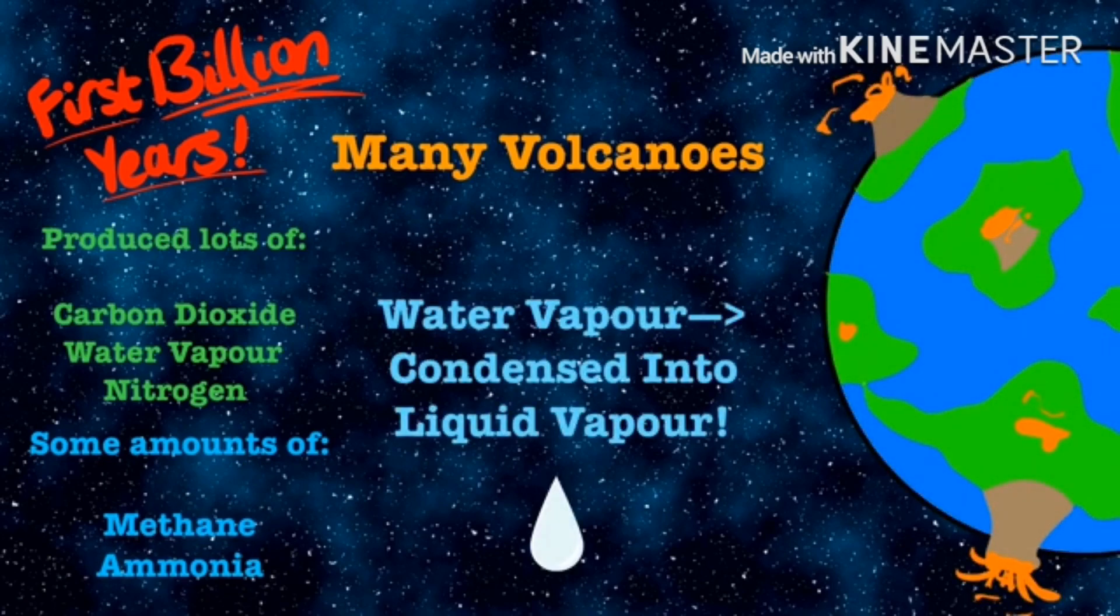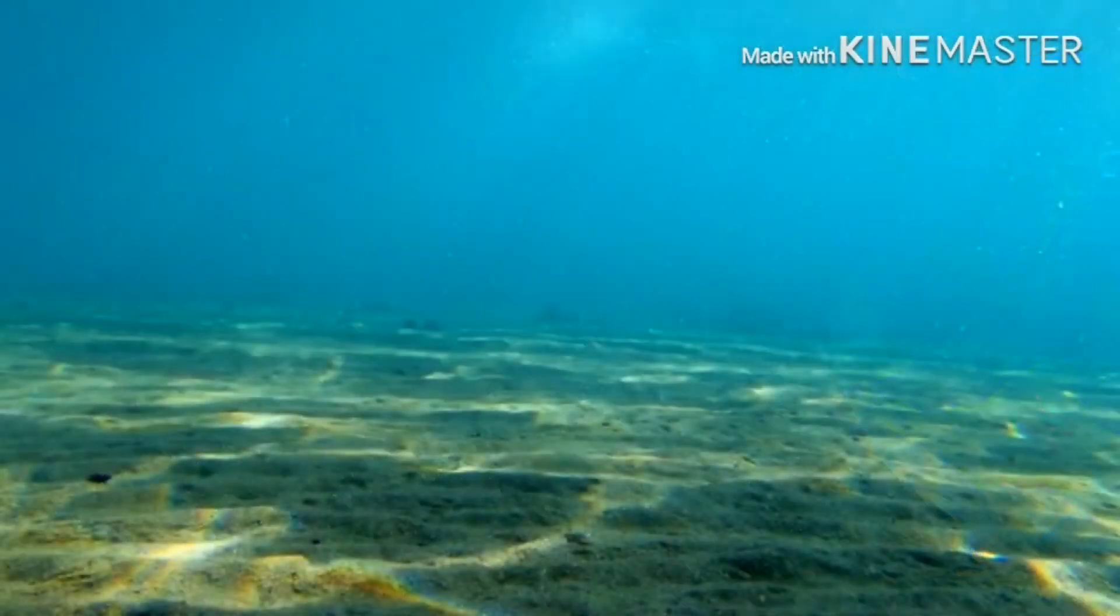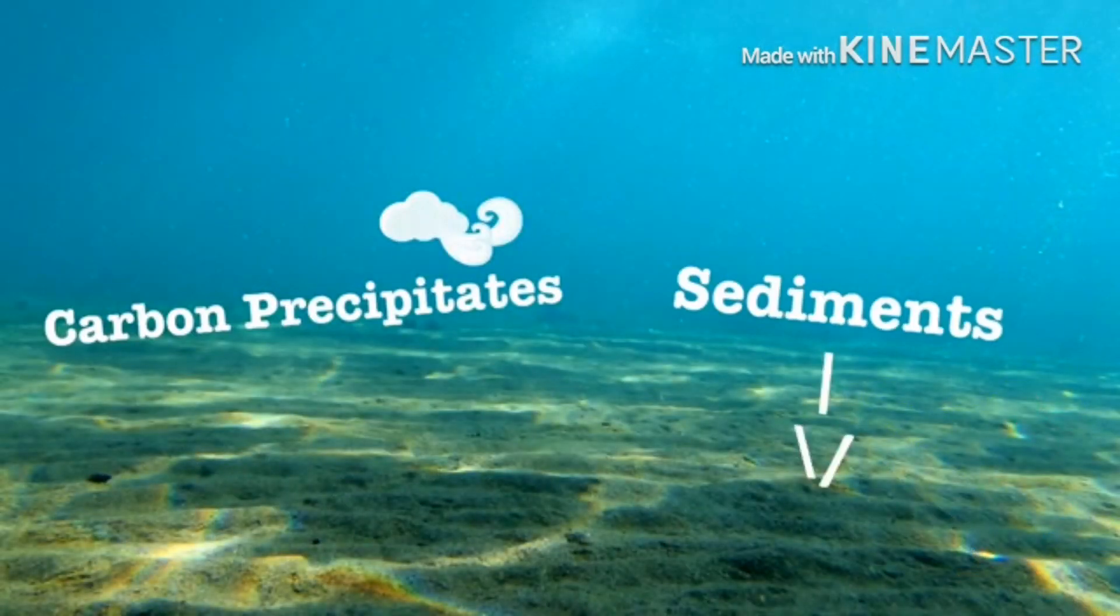Water vapour condensed into liquid water to create our oceans. This meant that the carbon dioxide from the atmosphere could now dissolve in the water. It could then form carbon precipitates and sediments.